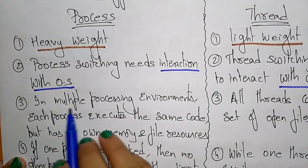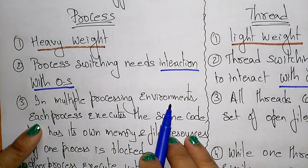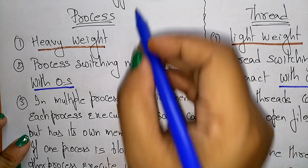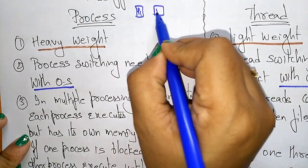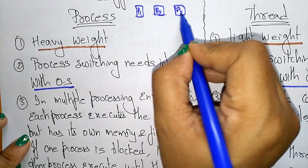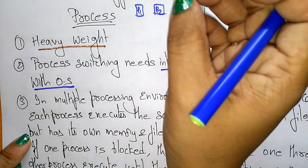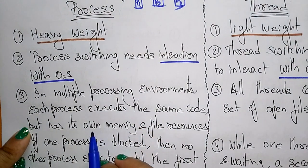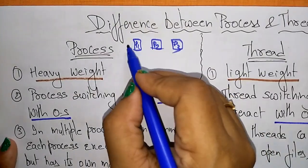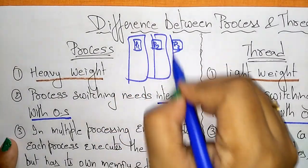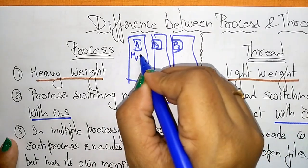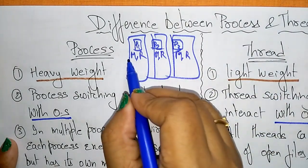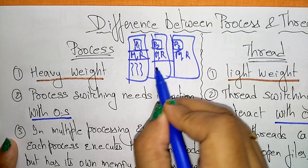In a multiprocessing environment, each process executes the same code but has its own memory and file resources. Different processes like P1, P2, P3 are independent — each has its own memory and resources. For threads, all threads can share the same set of open files and the same memory within that process. This file memory and resources are shared by multiple threads.